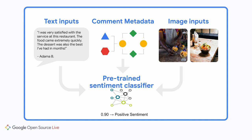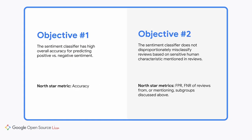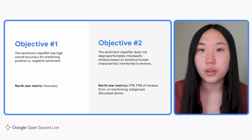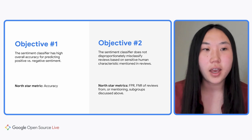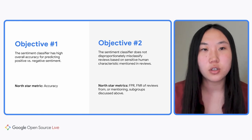Since you're a diligent owner, you decide to build a sentiment classifier that assesses whether each customer's comment is positive or negative. The inputs to the sentiment classifier are the text of the review, the review metadata, and any associated images. We're starting with two objectives to make sure that our model performs without bias. First, we want to ensure that our sentiment classifier has a high overall accuracy for predicting sentiment. Second, we want to make sure that the classifier does not disproportionately misclassify reviews based on sensitive identity characteristics mentioned in the review.